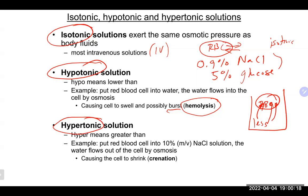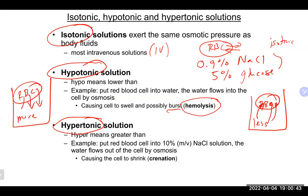Hypertonic means the solution outside the cell is more concentrated than inside. The cell loses water to dilute the outside solution, causing the cell to shrink — a process called crenation. This is the opposite of hemolysis: instead of swelling and bursting, the cell shrinks like a deflated donut hole.